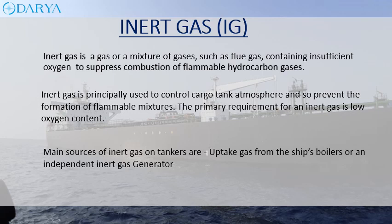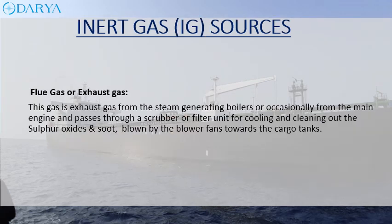The main sources of inert gas on tankers are uptake gas from the ship's boilers or an independent inert gas generator. Flue gas or exhaust gas is exhaust gas from the steam generating boilers, or occasionally from the main engine, and passes through a scrubber or filter unit for cooling and cleaning out the sulfur oxides and soot, blown by a blower fan towards the cargo tanks.